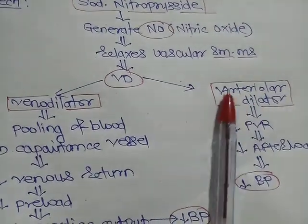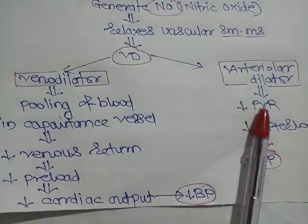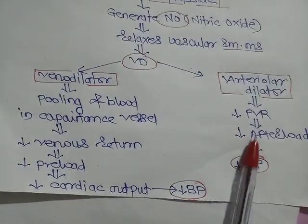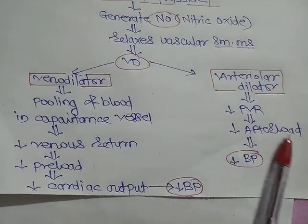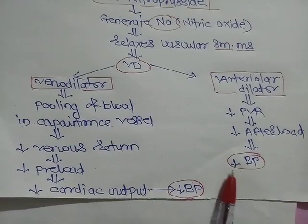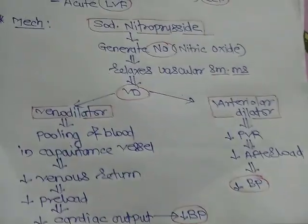As an arteriolodilator, arteriolodilatation decreases peripheral vascular resistance, thereby decreasing afterload, and hence blood pressure is also decreased. So in both cases — venodilatation and arteriolodilatation — there is a fall in blood pressure.